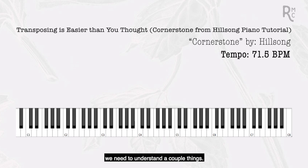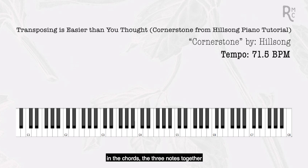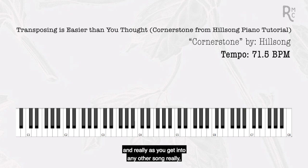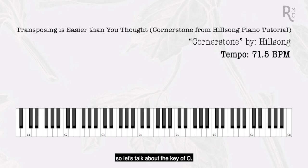Whenever we learn a key of music, we need to understand a couple of things: its scale, which is the map of the key, and then its chords, which are the actual groups of three notes we're going to play. Every modern song is made up of chords that are part of the scale in the key, so we have to understand the scale first, and then we get to the chords.